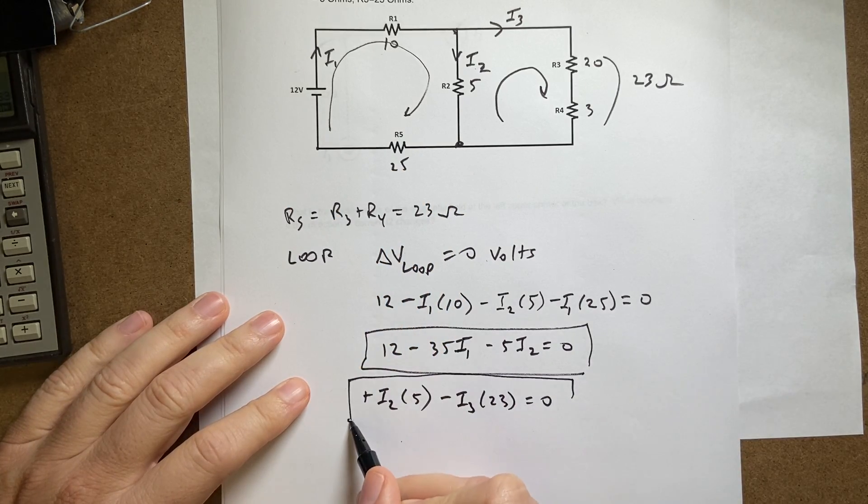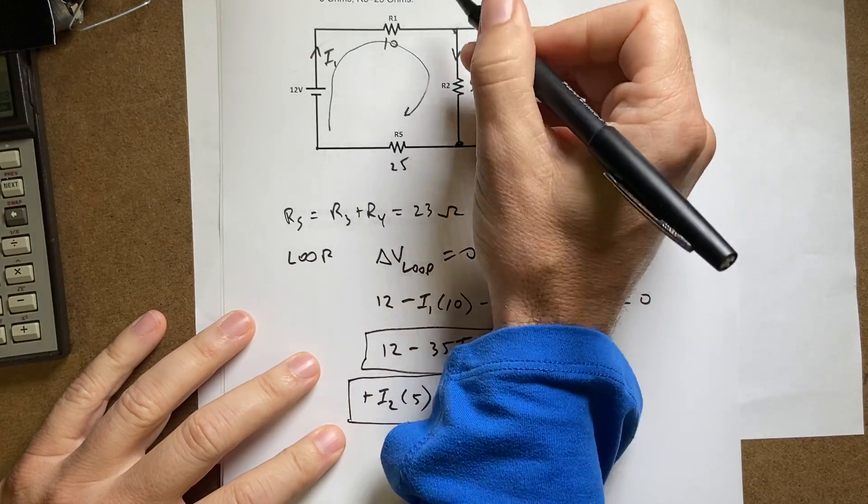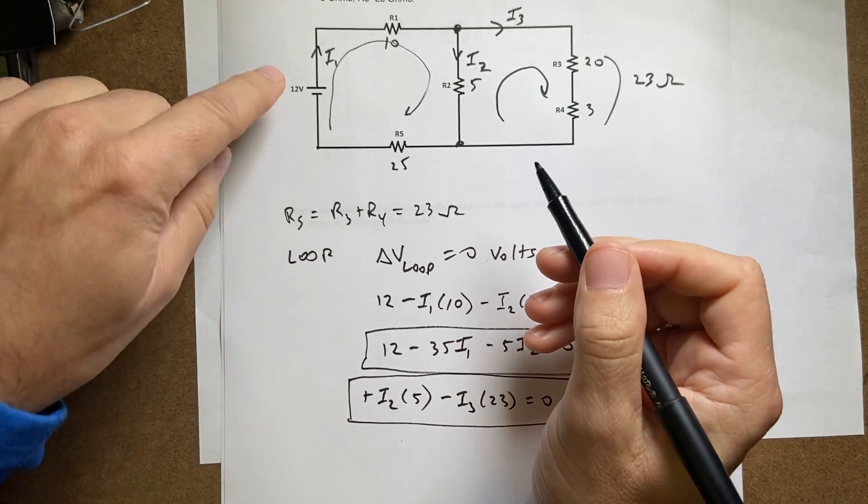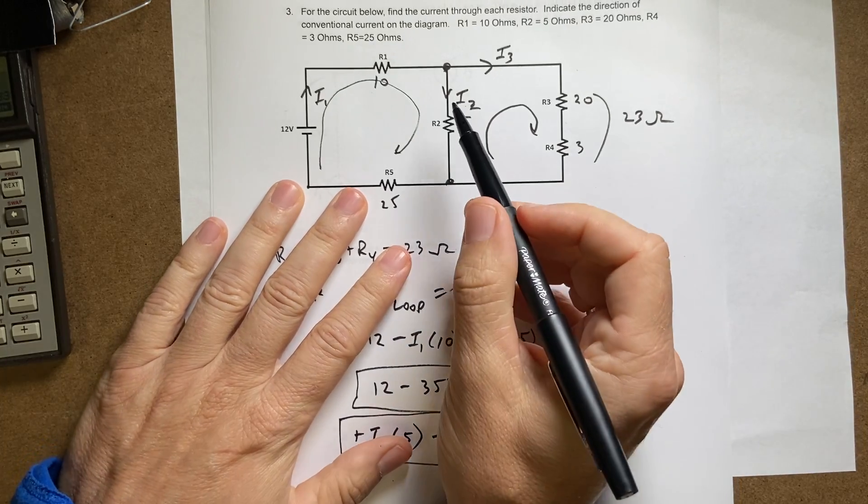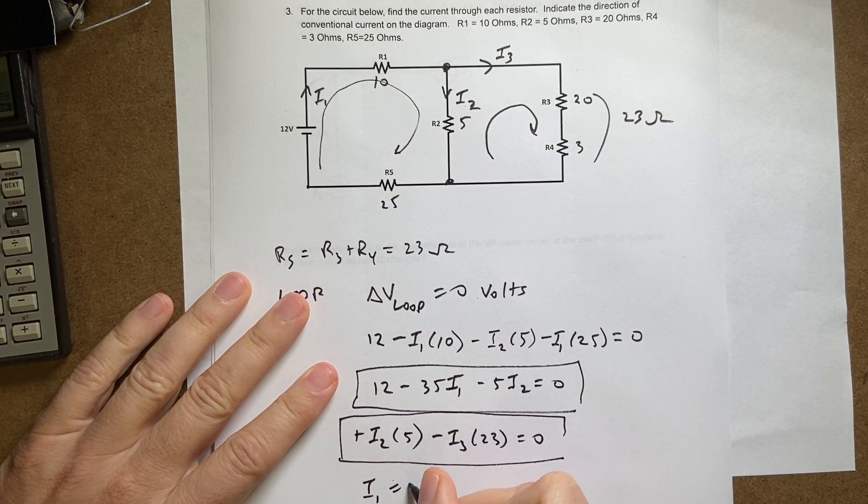Again, I can't solve that equation because I have two variables. Now finally, I do know one junction right here. I know that the current coming in is equal to the current coming out, so I have i1 equals i2 plus i3.